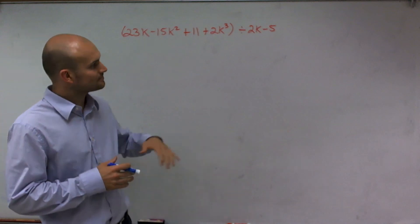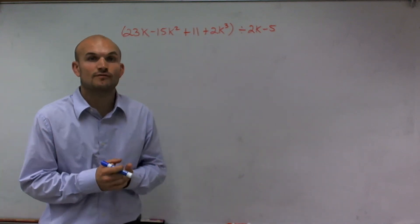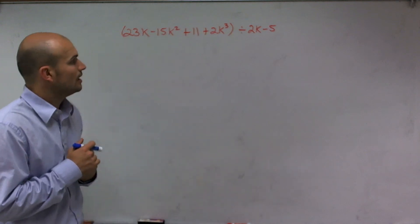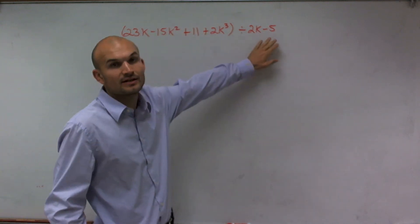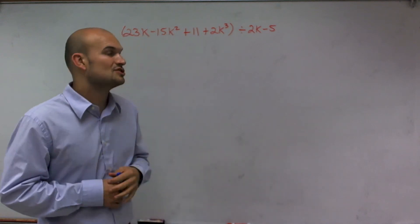Now, there's a couple ways we can work on division. And on this problem, I'm going to show you how to solve it by using long division. And that's primarily because I have it in the form of a binomial, and the binomial is in the form of 2k minus 5.